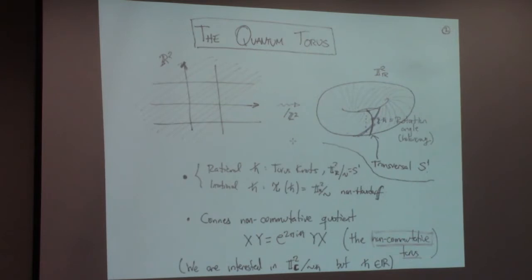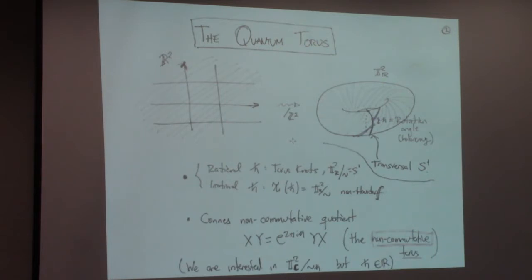ℏ is the slope of these lines, and then I project into the torus, and of course I get a foliation. There are two interesting cases. If ℏ is rational, the leaves of this foliation wind around and then close themselves up — every leaf is a torus knot. If ℏ is irrational, every leaf of the foliation is dense in the entire torus; the closure of every leaf is the entire torus and it doesn't close up on itself. These are two very different cases.